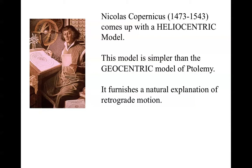This model is much simpler than the geocentric model of Ptolemy. It doesn't require any of these epicycles and equants and deferents that we have in the other model, and most importantly, it furnishes a natural explanation of retrograde motion. Copernicus did not publish his model until the year of his death because it was so contrary to the common belief at the time — he feared he would get in trouble with the church. But the work, including this model, was published in 1543.